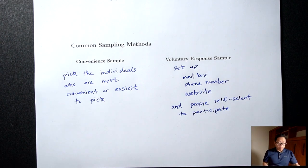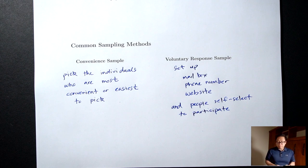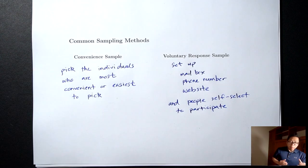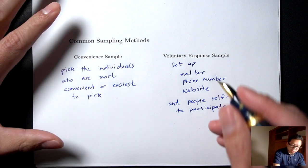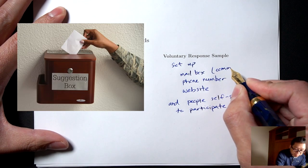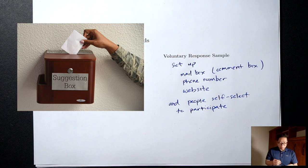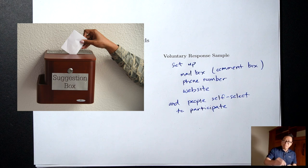You set up a phone number, a mailbox, or a website, and you don't get to choose who participates — the people themselves choose whether to come to your website and participate or not. You're not actually choosing who's in your sample. The mailbox situation I'm thinking of is if you go to a restaurant, sometimes they have a little comment box where after you eat, you can choose to write down a comment and put it in the box.